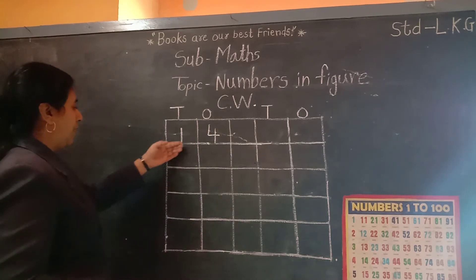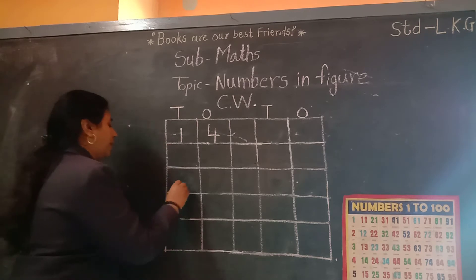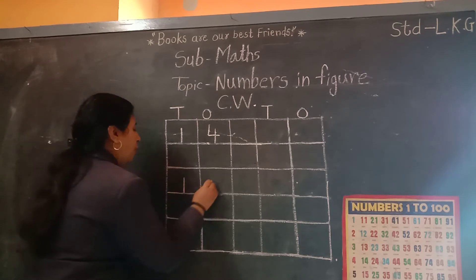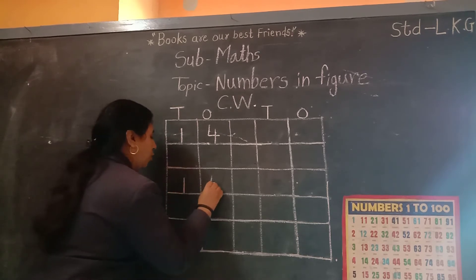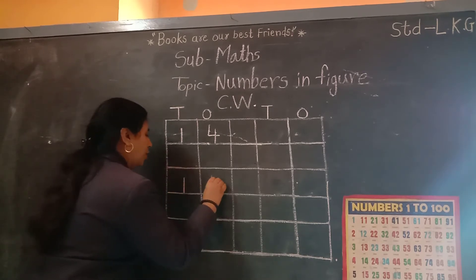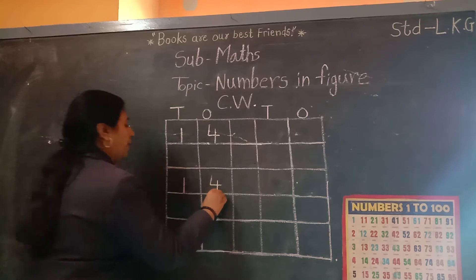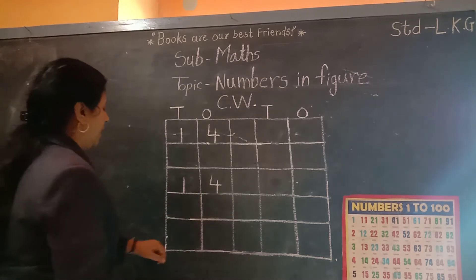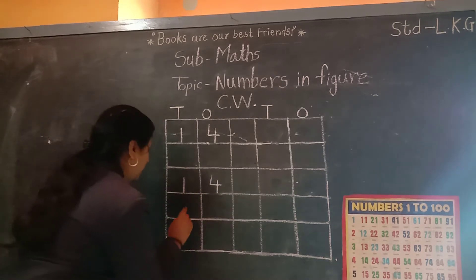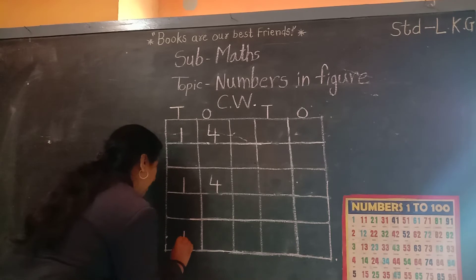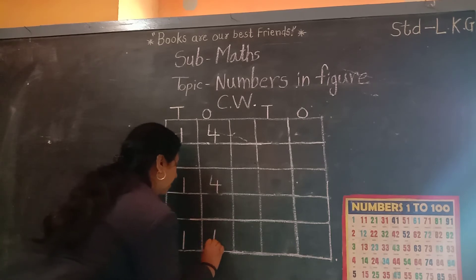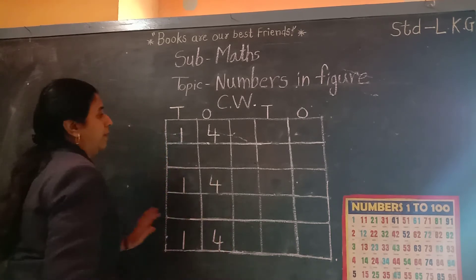After this, you have to leave one square and start from here: 1, 4, 14. Again, leave one square and start writing here: 1, 4, 14.